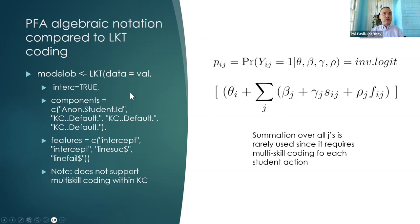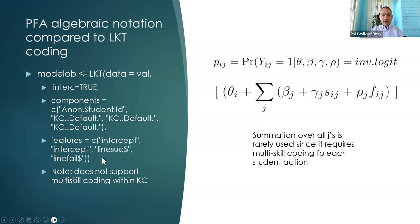The components start with student ID — that's our theta. Then KC default appears three times: the first KC default applies to the intercept feature, the second to linesuc$, and the third to linefail$. So we're saying: for students, we want an intercept; for KCs, we want an intercept; for KCs, we want to look at the linear effect of prior successes; and for KCs, we want to look at the linear effect of prior failures.